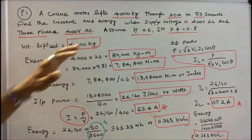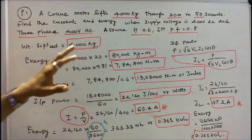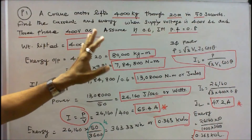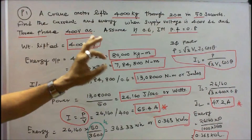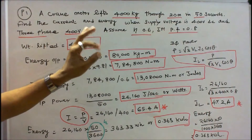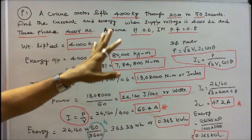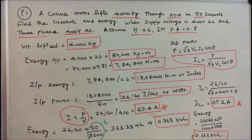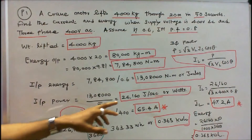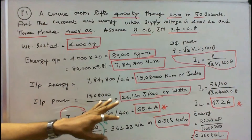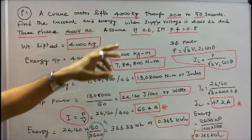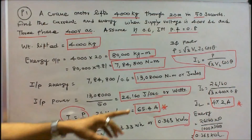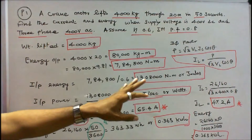When the system is connected to 3-phase 400 V AC, the formula is P is equal to root 3 into VL into IL into cos theta. VL is line voltage, IL is line current, cos theta is power factor, given as 0.8. We know the power is 26,160 and voltage is 400. Substituting, IL is equal to 47.2 amps.